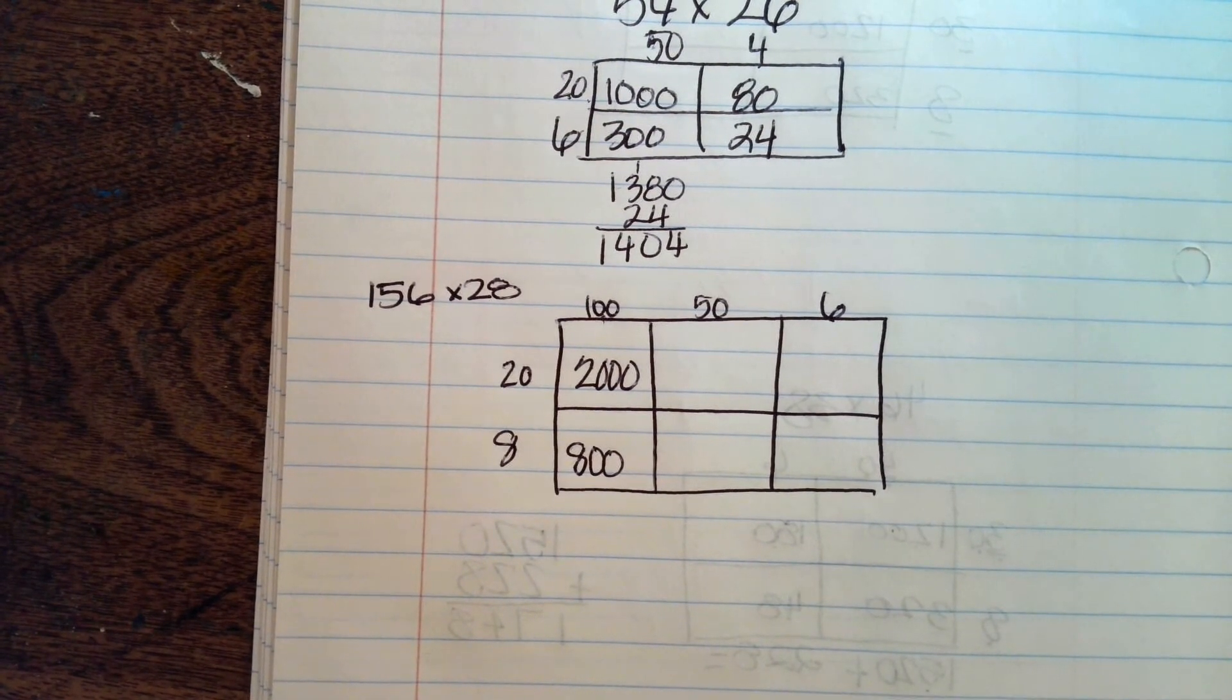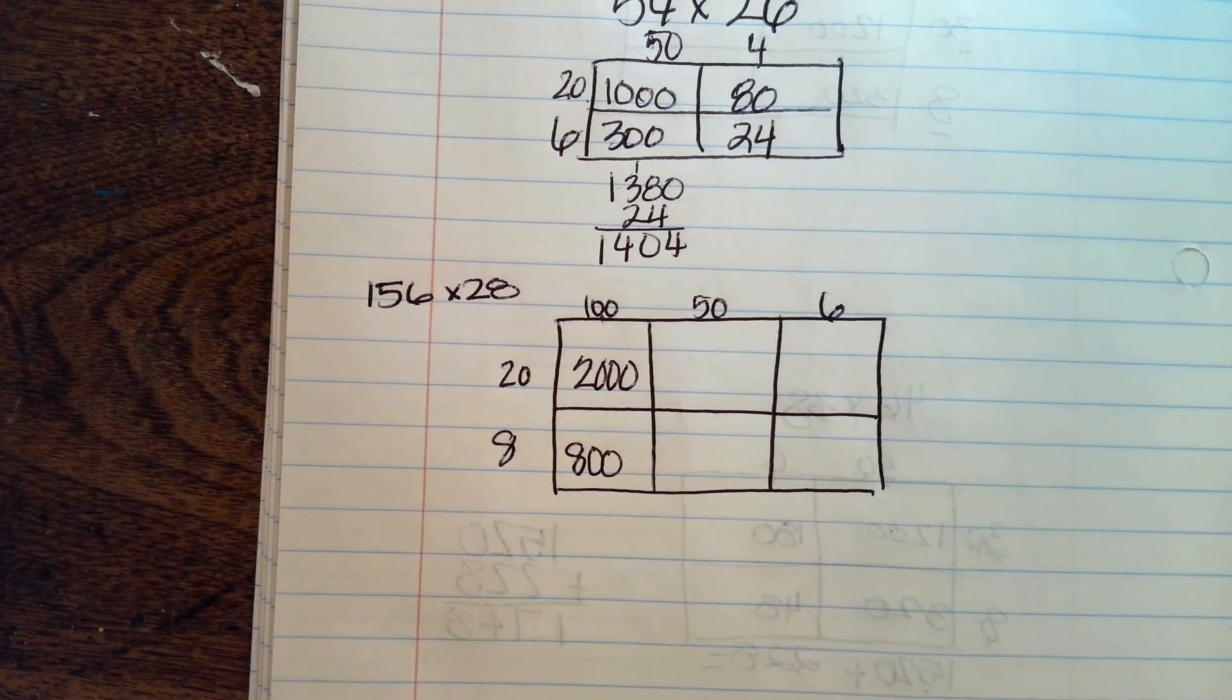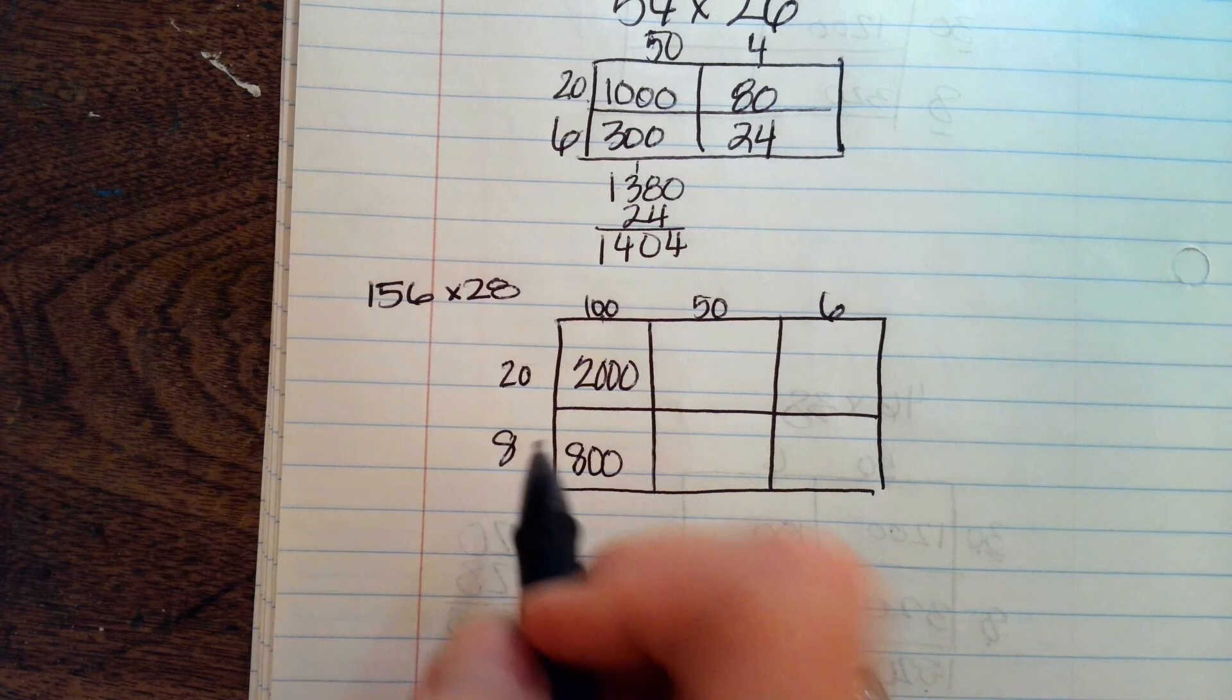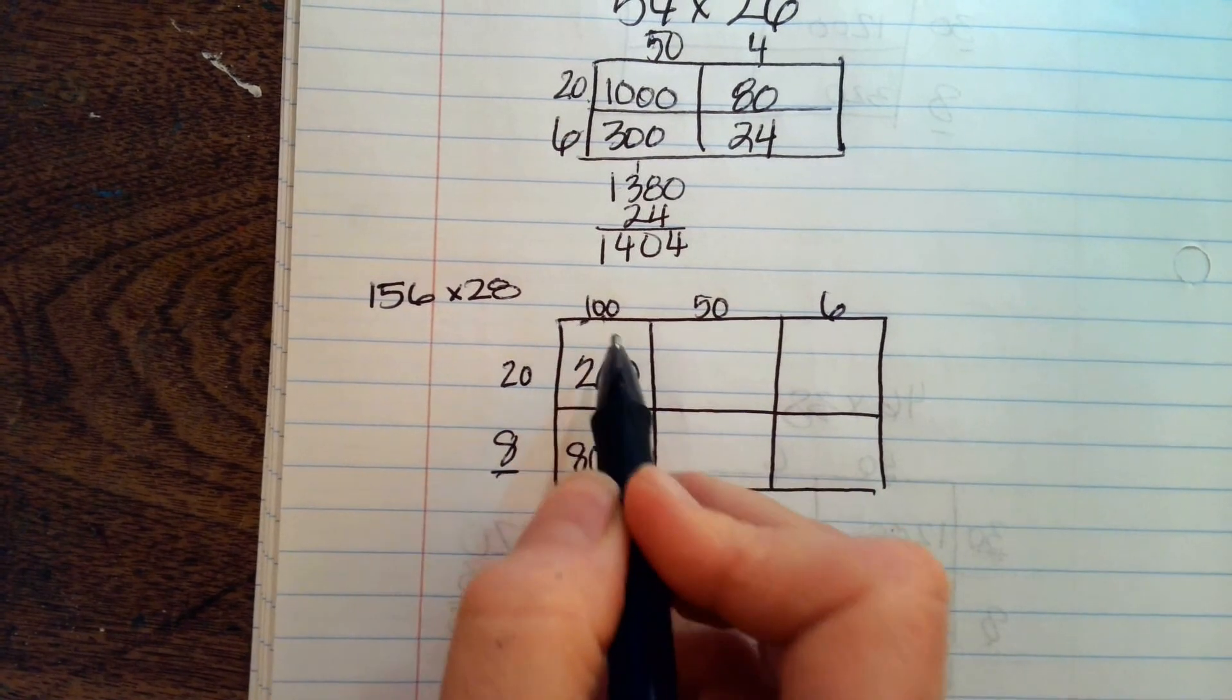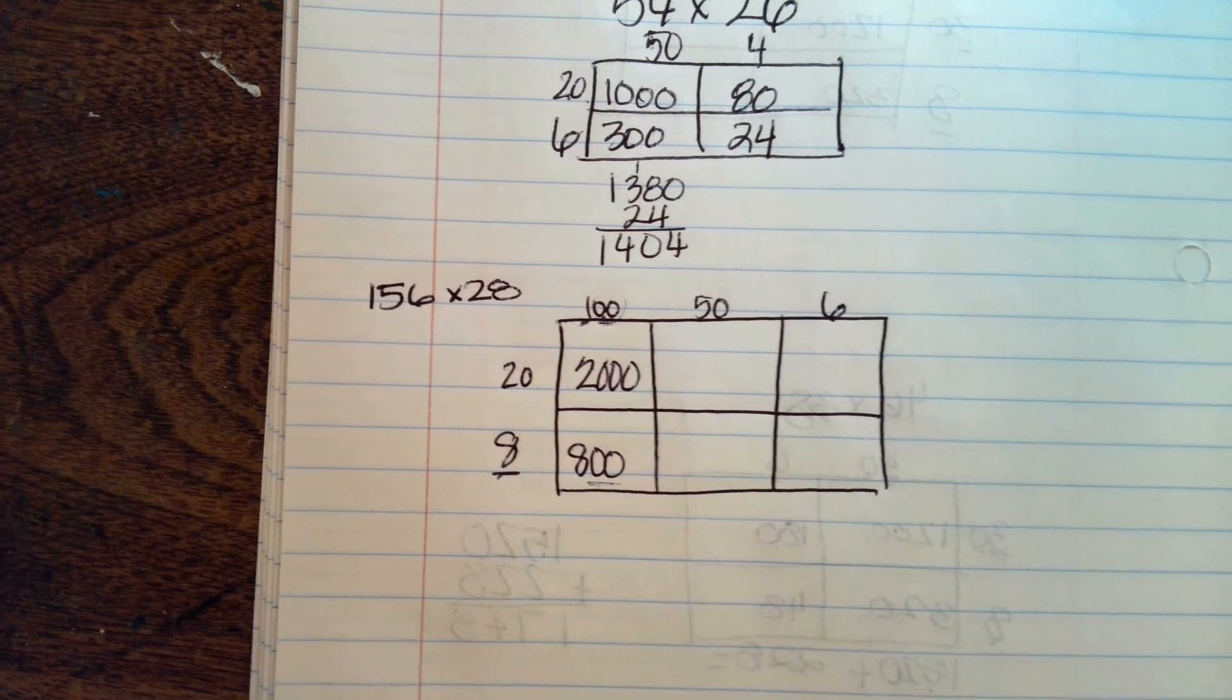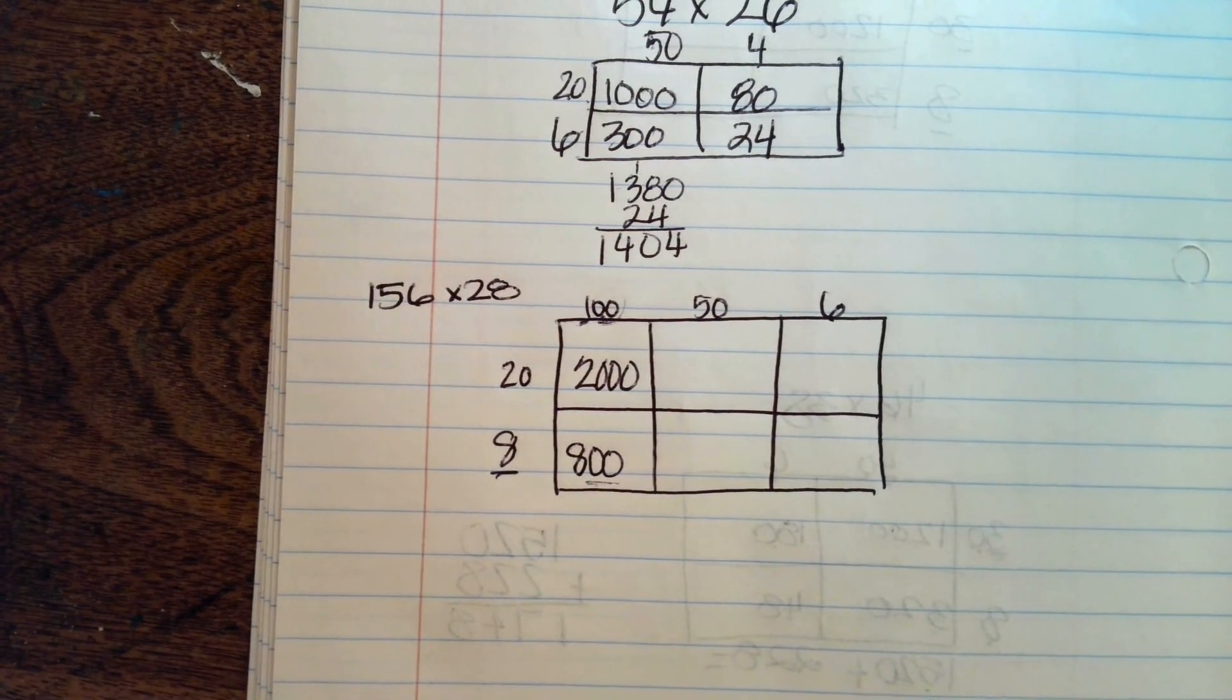So you're putting the number into the box and then adding the two zeros from the 100? Yeah. So I'm doing 8 times 1 is 8 and then these two zeros I haven't done anything with, so I have to put them in the back. Make sense? Yeah. All right.